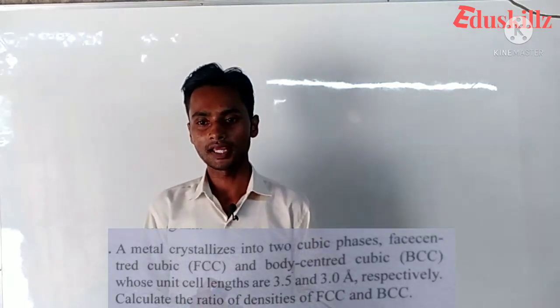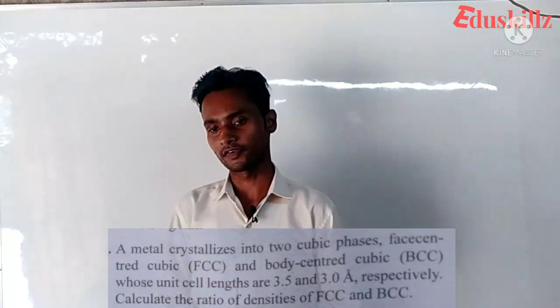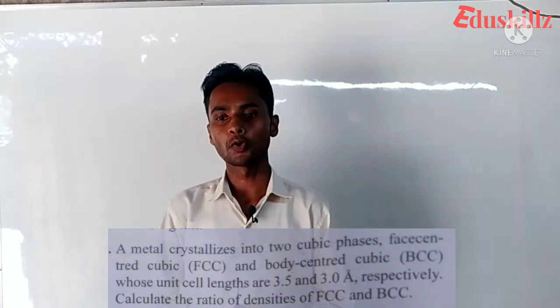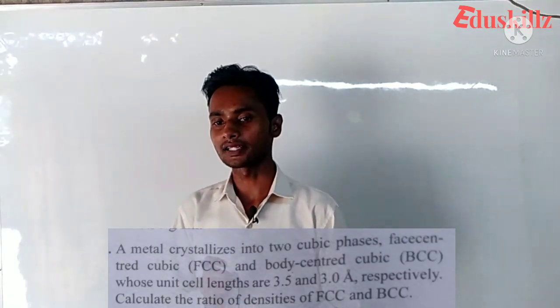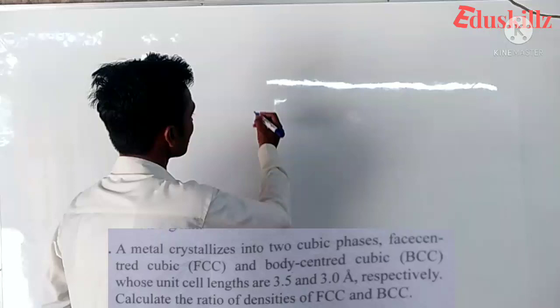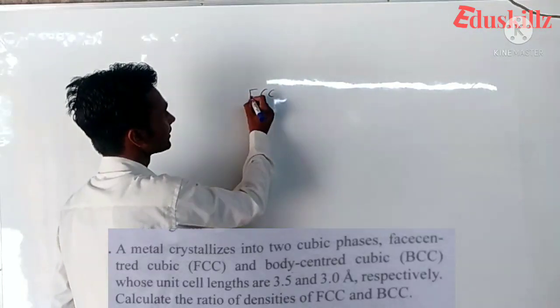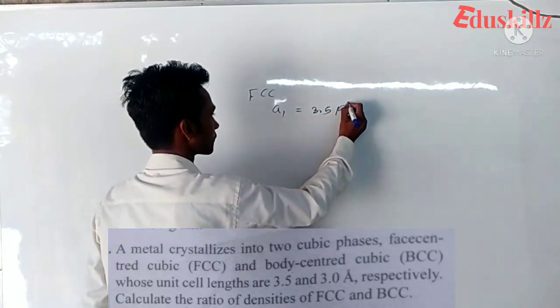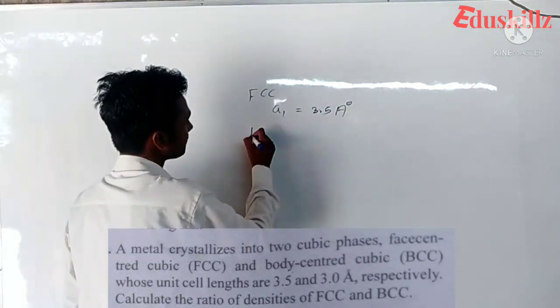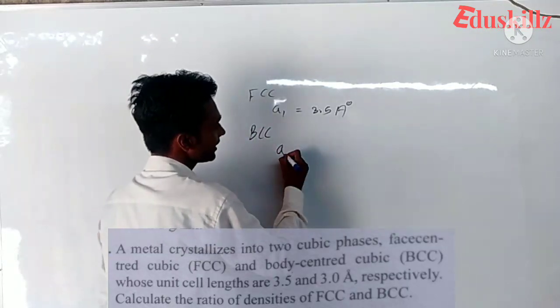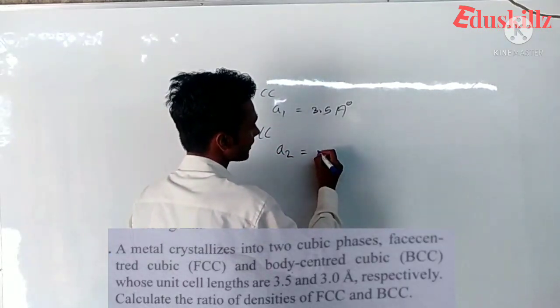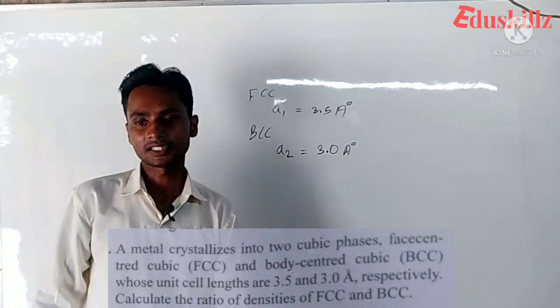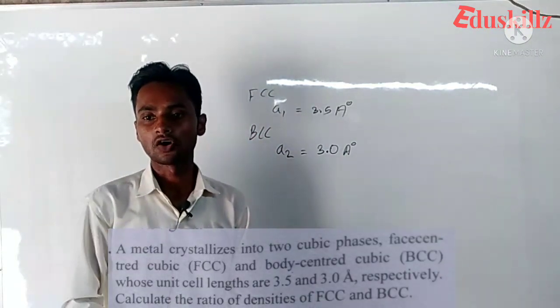The question is that the metal crystallizes into two cubic phases: one is the face-centered cubic and the other is the body-centered cubic. The unit cell length for FCC which is a1 is 3.5 angstrom, and for BCC which is a2 is 3.0 angstrom. These lengths are given and we want to calculate the ratio of density FCC and BCC.